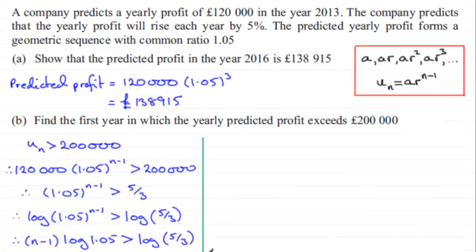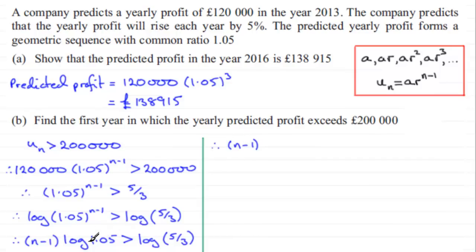We must be very careful when dealing with logs and inequalities. We now divide both sides by log(1.05). Remember: the log of any number greater than one is positive, but the log of any number less than one is negative — and if you divide by a negative value you must switch the inequality. Here log(1.05) is positive since 1.05 > 1, so we don't need to switch.